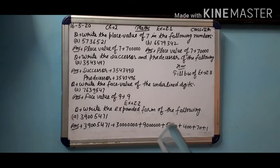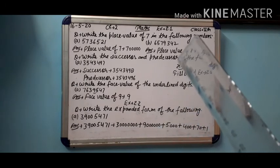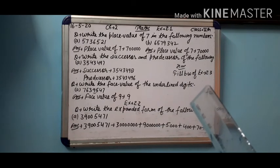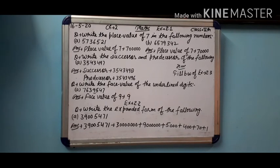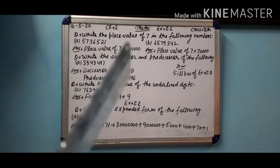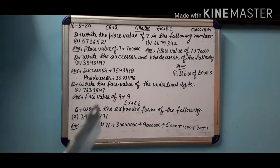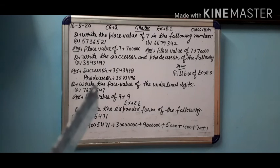For homework you have to fill the book work. Did you understand? In successor we do plus one, in predecessor we do minus one. Face value remains as it is the same. In expanded form we write zeros after the numbers. And in place value, whichever number's place value we need to find, first we write that number, then we write zeros after it.